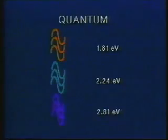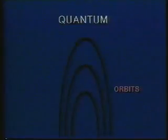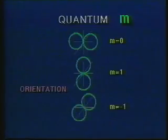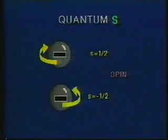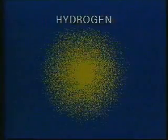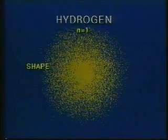The wave mechanical model further extended the concept of the quantum. It defined the discrete permissible shapes of orbit clouds using a quantum number L. For a hydrogen atom with orbit N equals one, there is only one possible shape, and this shape has the quantum number L equal to zero.